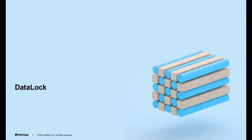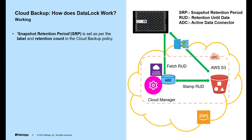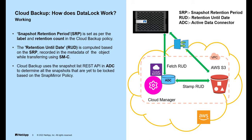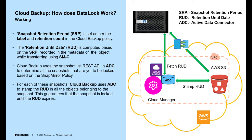Let's understand how the data lock feature works. The snapshot retention period is set based on the label and retention count defined in the cloud backup policy. The retention until date is computed based on the snapshot retention period recorded in the metadata of the object while transferring using SnapMirror to Cloud. Cloud backup uses the Snapshot List REST API in the Active Data Connector to determine all snapshots not yet locked, based on the SnapMirror policy. For each snapshot, cloud backup uses the Active Data Connector to stamp the retention until date on all objects belonging to that snapshot, guaranteeing it is locked until the retention until date expires.